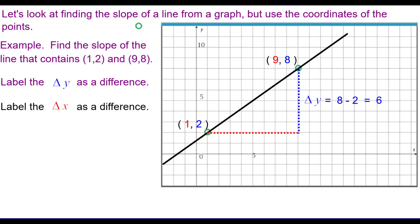Similarly, I'd like you to label the change in x, this length of this leg, as a difference of two numbers as well. And that would be 9 minus 1, going in the same order as we did 8 minus 2.